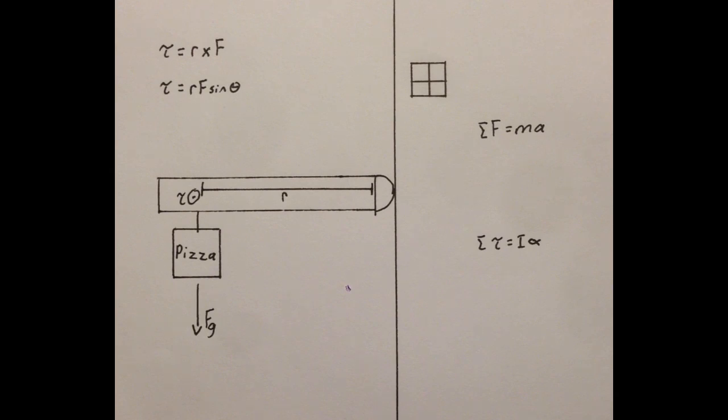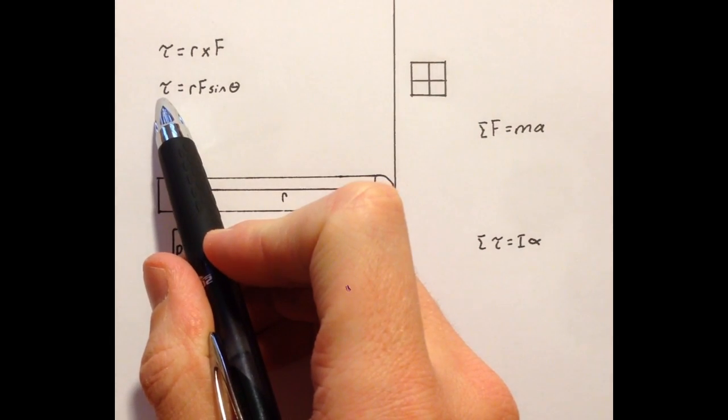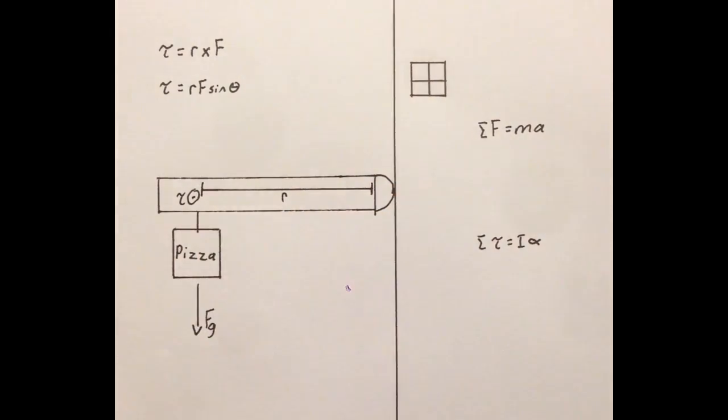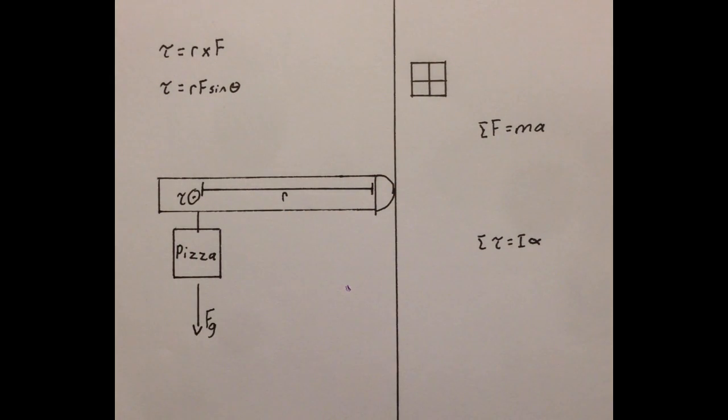Now, if you're not going to actually use the cross product and calculate the direction of torque, because torque is a vector, and you're just going to use the magnitude equation, torque equals rf sine theta, then you must have some way to determine the direction that the torque goes, thus making it a vector.